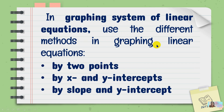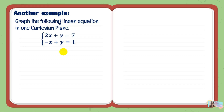In graphing systems of linear equations, we use the different methods we've studied before — I'll put the link in the description box so you can recall how to graph linear equations. The methods are: by two points, by x and y intercepts, and by slope and y-intercept. The x and y intercept method and the slope and y-intercept method are the easiest ways to graph linear equations within a system. Let's have another example.